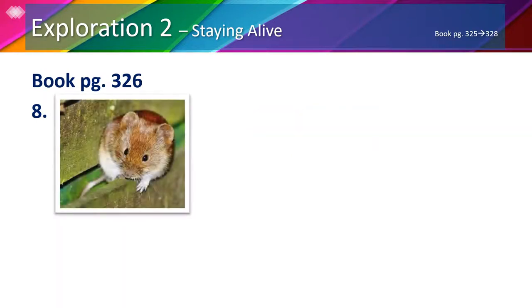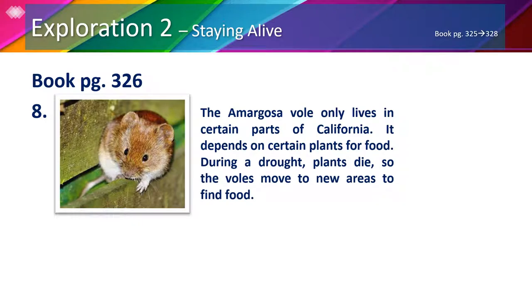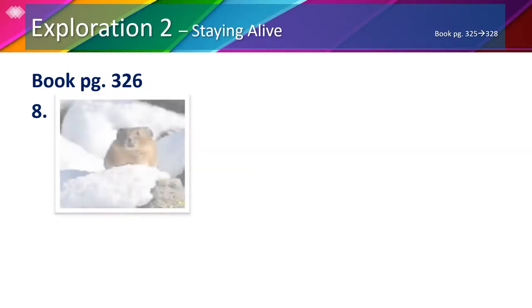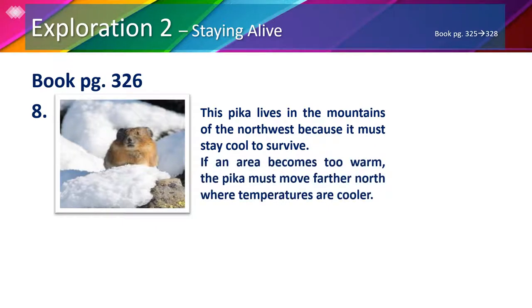The second picture shows a vole which looks like a hamster or a mouse — the Amargosa vole only lives in certain parts of California and depends on certain plants for food. During a drought, plants die so the voles move to new areas to find food, so we will circle the vole since it is moving to a new area after the drought. In the third picture we can see a pika, a cousin to the rabbit. This pika lives in the mountains of the northwest because it must stay cool to survive. If an area becomes too warm, the pika must move farther north where temperatures are cooler, so we will circle the pika since it has to move to a cooler area when the area becomes too warm.